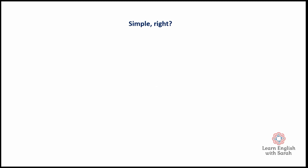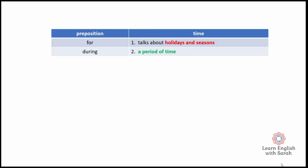It's not so simple, because 'for' and 'during' have got two meanings. 'For' can also talk about holidays and seasons — things like Christmas holidays or the summer holiday. And 'during' can talk about a period of time. That's a little strange, because I just told you that 'for' is for a period of time.